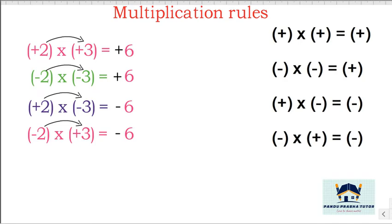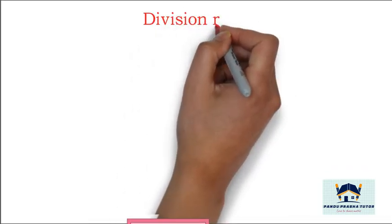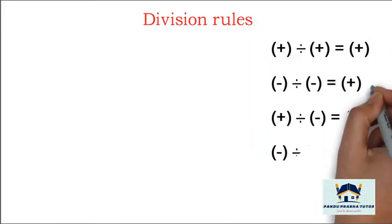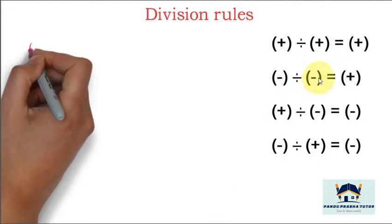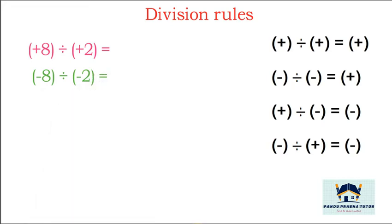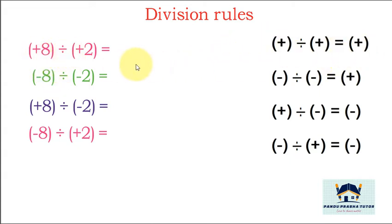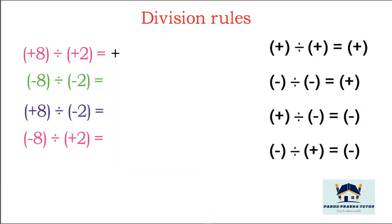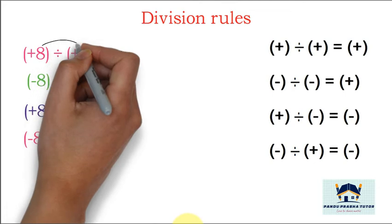Same sign plus, different sign minus. Now we will go to the division rule. Division rule is the same as multiplication: plus divided by plus is plus, minus divided by minus is plus, plus divided by minus is minus, minus divided by plus is minus. Examples: plus 8 divided by plus 2, minus 8 divided by minus 2, plus 8 divided by minus 2, minus 8 divided by plus 2. If both signs are the same, the answer is plus. If the signs are different, write minus.